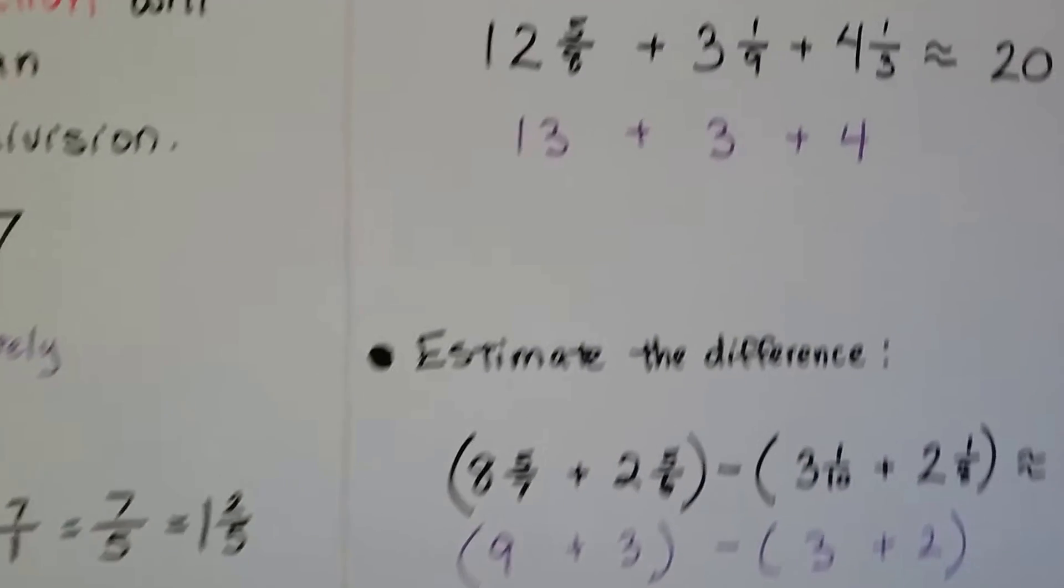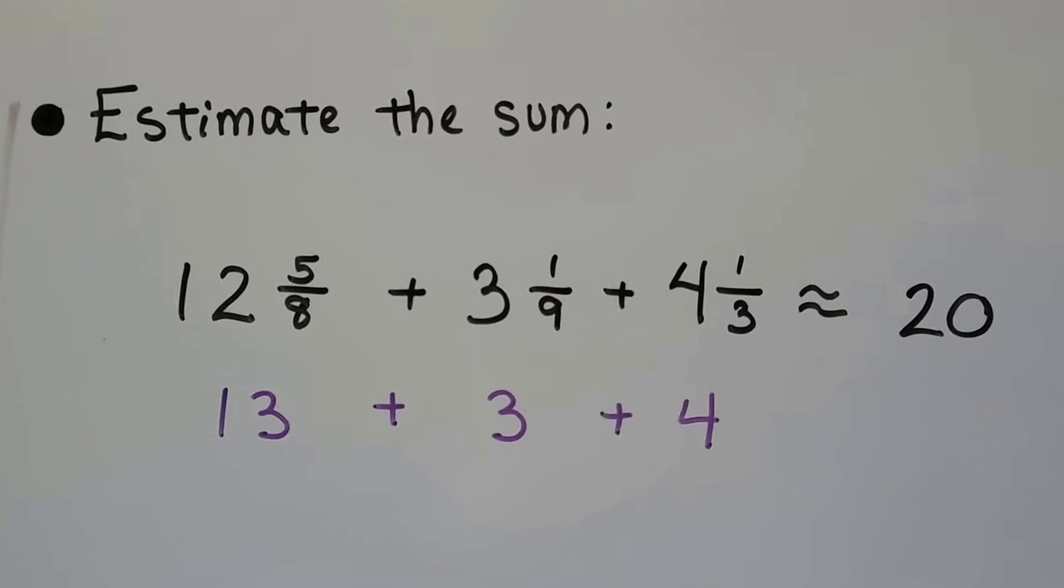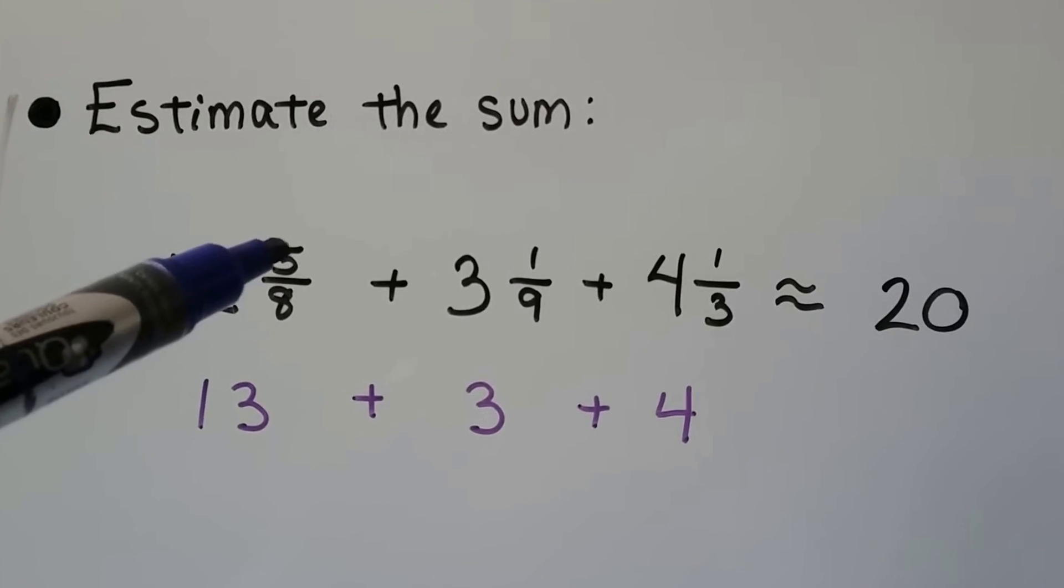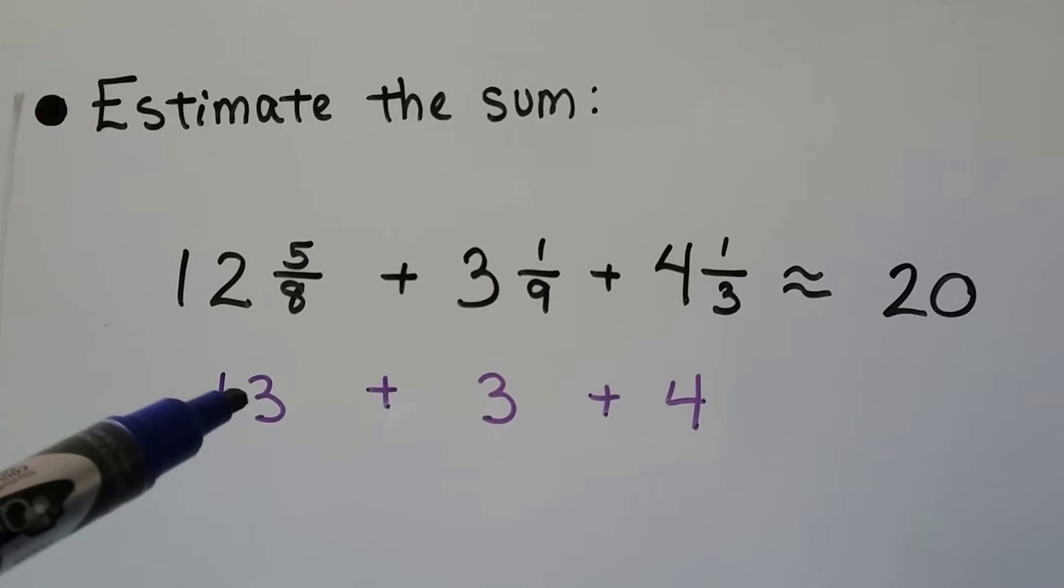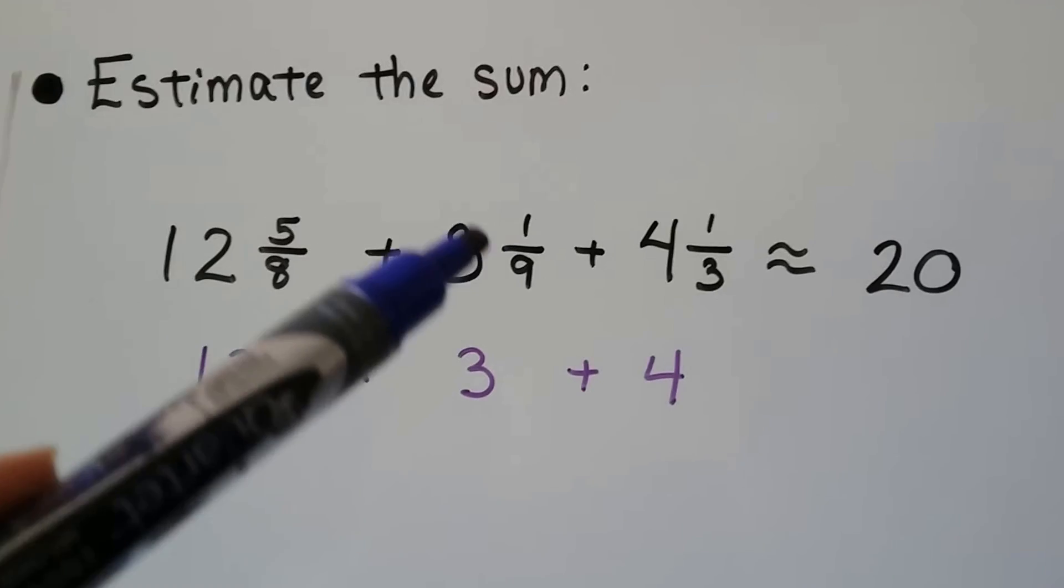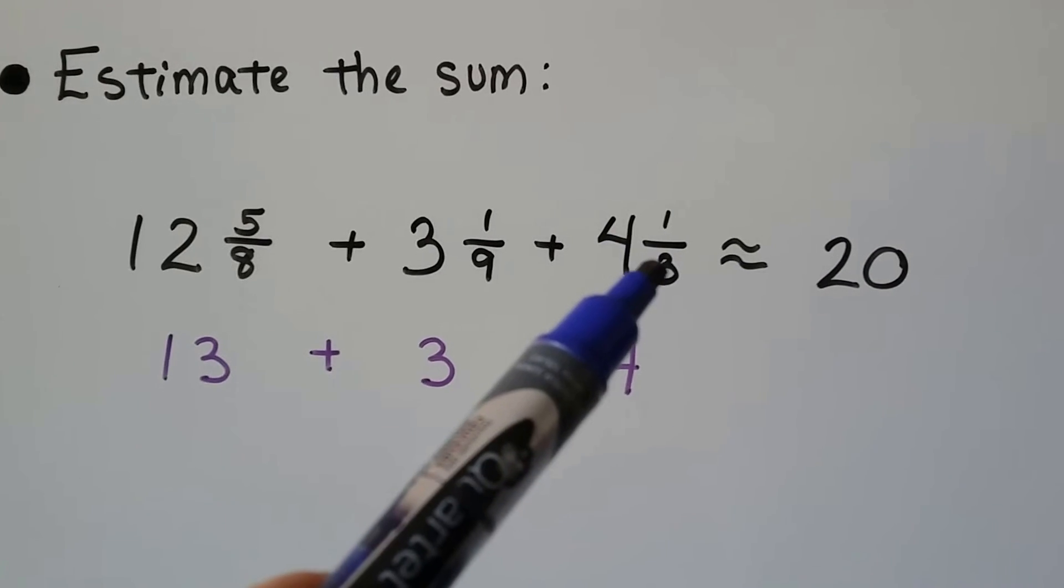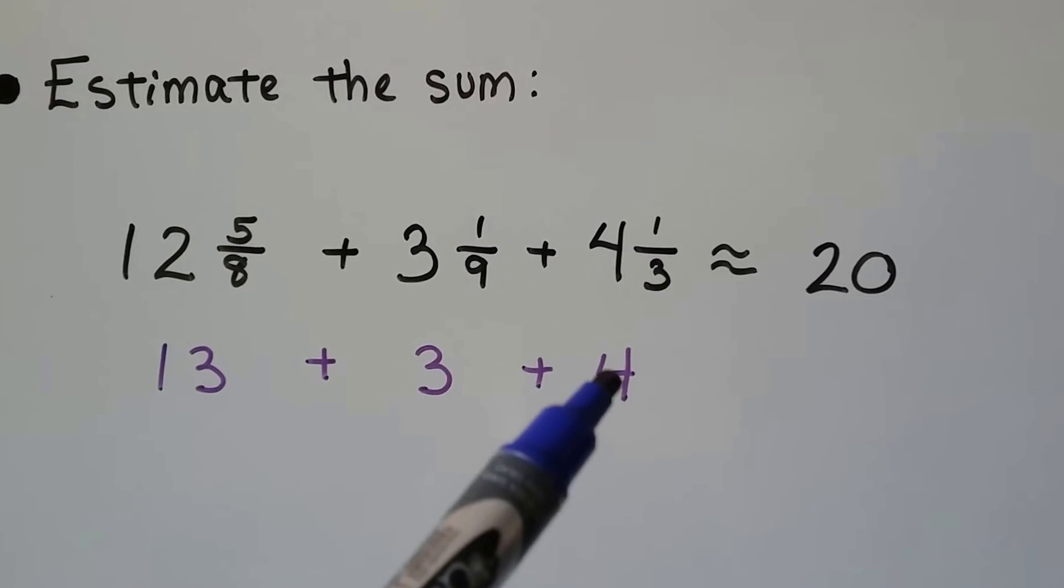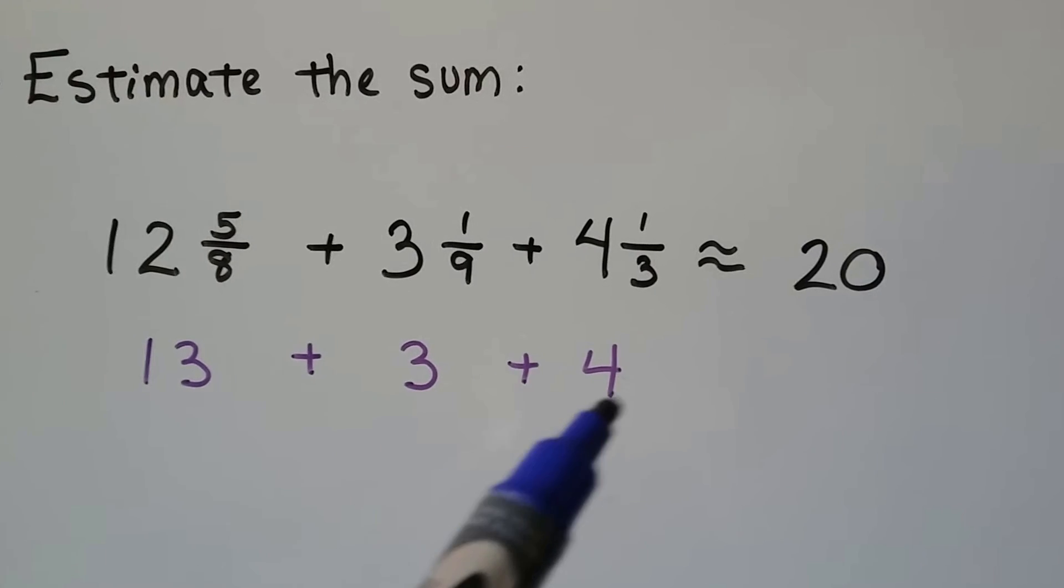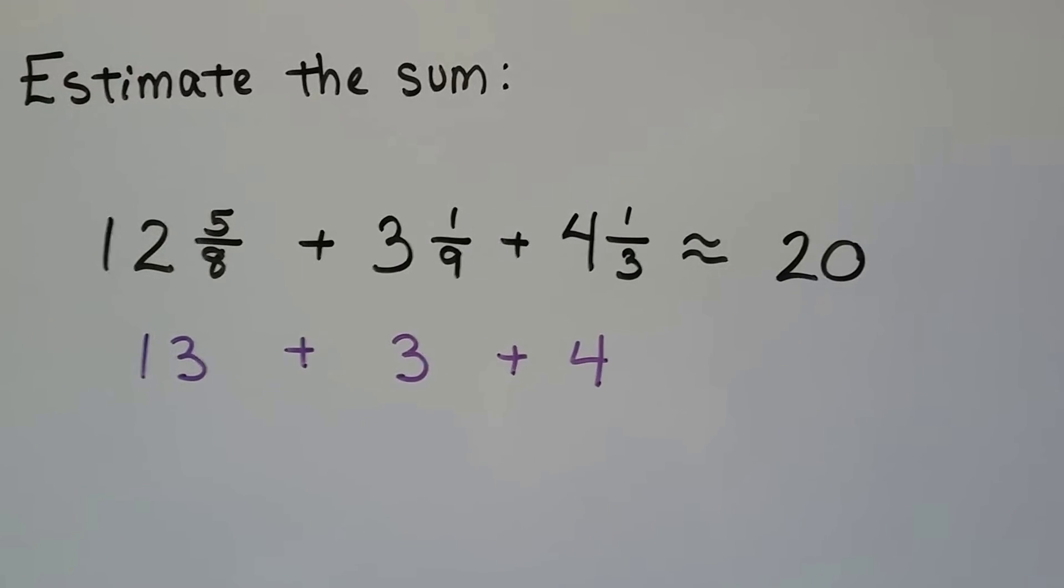Now estimate the sum. We've got 12 and 5 eighths plus 3 and 1 ninth plus 4 and 1 third. 5 eighths is more than half of 8, so we round up to 13. 1 is nowhere near half of 9, so we round to 3. 1 third is not more than half, so we round to 4. Now we add 13 plus 3, which is 16, plus 4 is 20, so it's approximately 20.